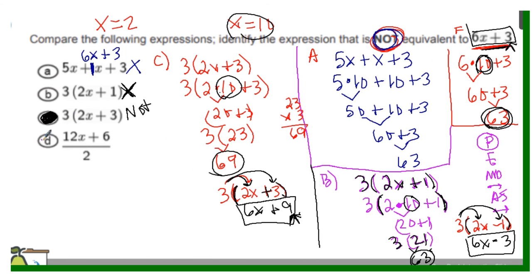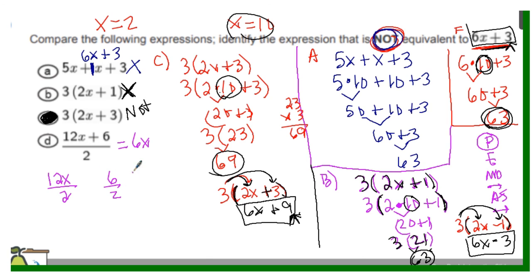For the last option, substitute 10 for x: you get 12 times 10, which is 120, plus 6 is 126, then divide by 2, giving 63. You can also simplify algebraically: divide 12x by 2 to get 6x, and divide 6 by 2 to get 3, keeping the same sign in the middle. So this expression simplifies to 6x plus 3, confirming it is equivalent.